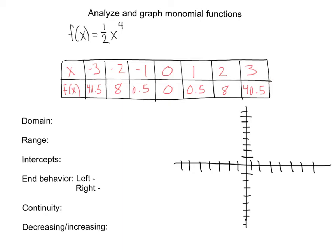If I go ahead and graph these points: negative three, 40.5 — that's way up here so I'm not even going to plot that. Negative two, eight — I'll put a dot about here. Negative 1.5 is about here, and 1.5 over here. I've also got 2.8 and 3, way up at 40.5 again. I also forgot my point 0, 0. So my graph is going to look something like this, which makes sense based on my positive and even exponent — both ends are pointing up.